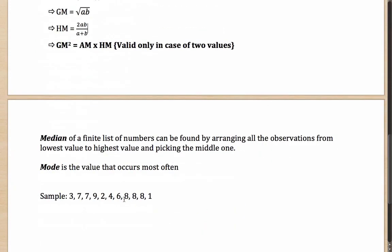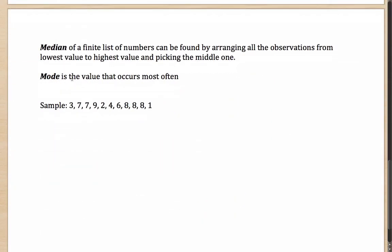Moving on to median and mode. The median of a finite list of numbers is found by arranging all observations from lowest to highest and picking the middle one. It represents the central value of the entire list. Mode is the value that occurs most often. Let's look at what the median and mode are for a random sample.